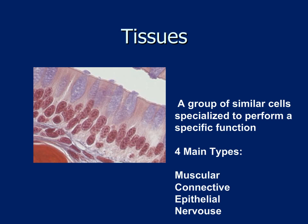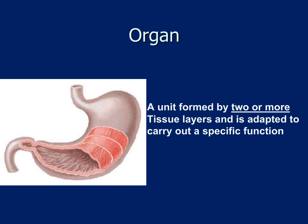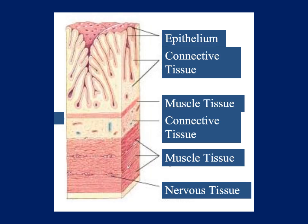Going one level further, we have organs — units formed by two or more tissues joined together to carry out a specific body function. For example, the stomach helps process food for digestion and absorption. The inside lining of the stomach is made of epithelial tissue; below that are blood vessels embedded in connective tissue; below that is muscular tissue, responsible for the churning movements of the stomach; and finally, there is a great deal of nervous tissue within the stomach and GI tract.